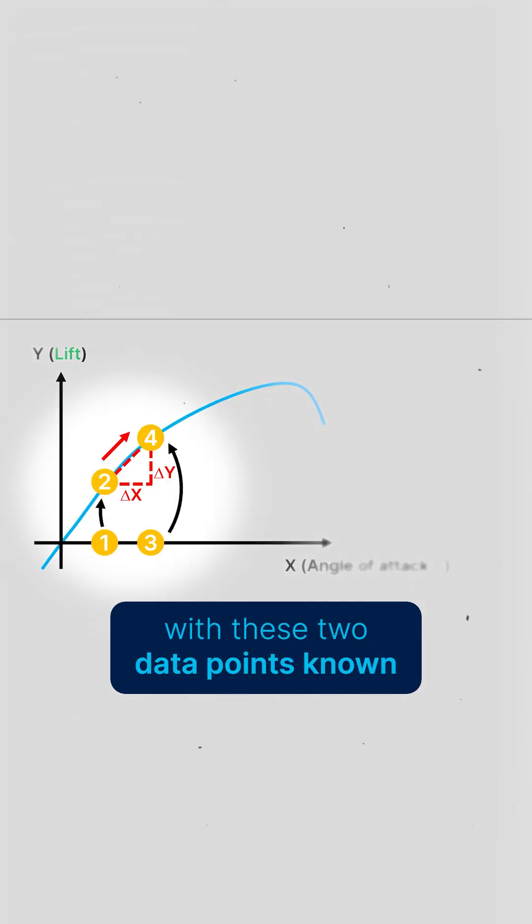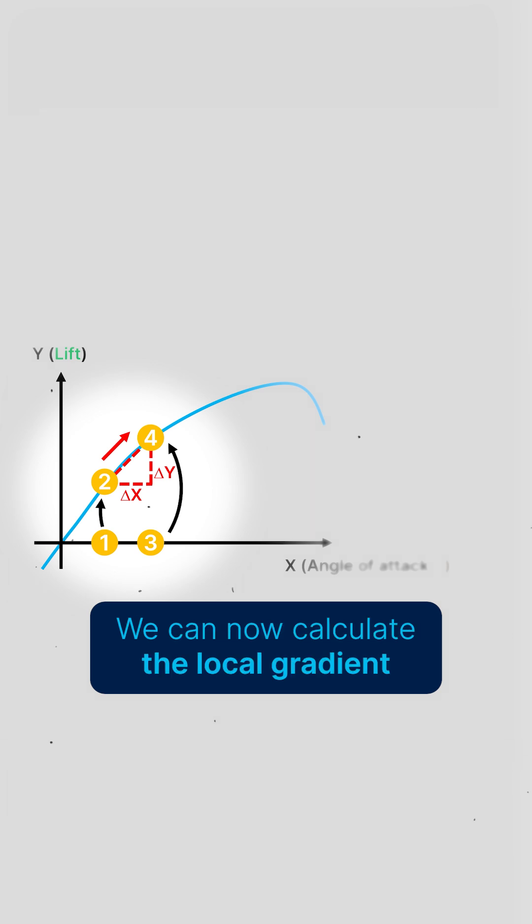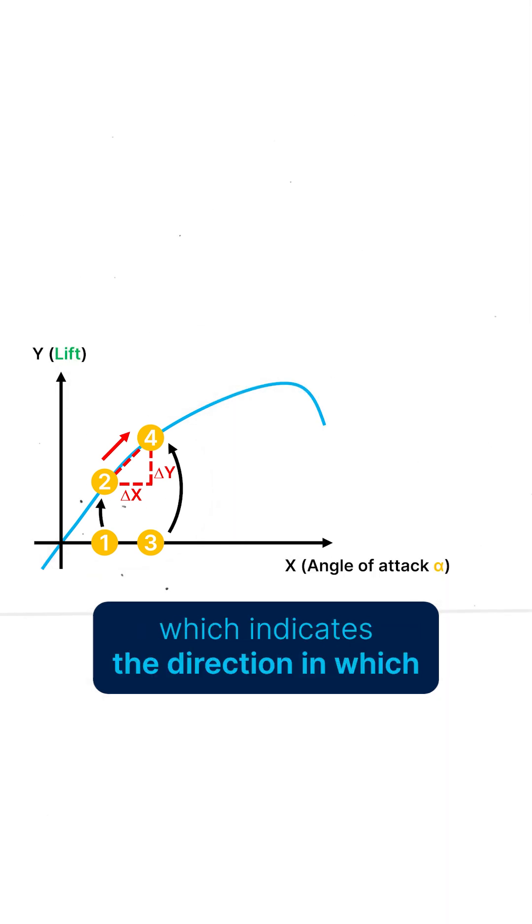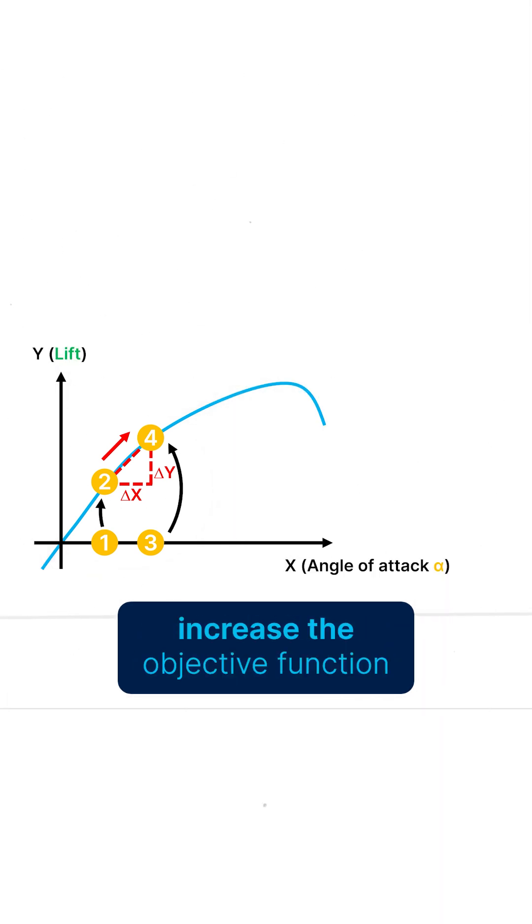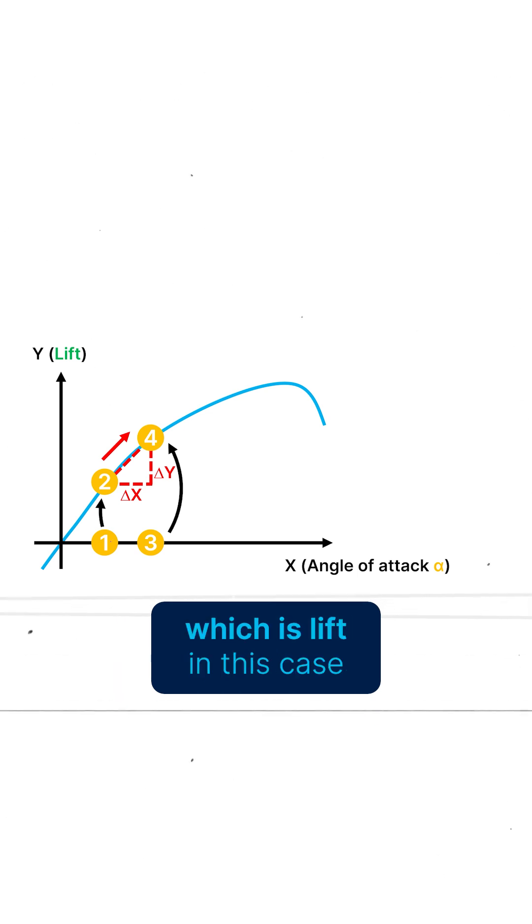With these two data points known, we can now calculate the local gradient, which indicates the direction in which we need to march to improve or increase the objective function, which is lift in this case.